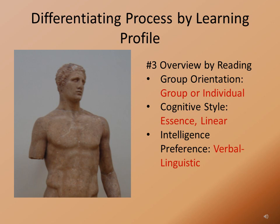In the final anticipatory set activity, students will overview by reading. Their group orientation will be either group or individual depending on their preference or teacher assignment. The cognitive style is to establish an essence for understanding muscles and how they work together in a linear progression. The intelligence preference is verbal and linguistic.